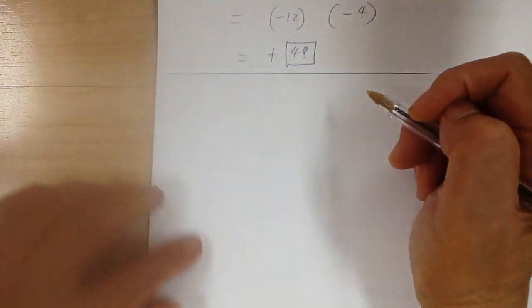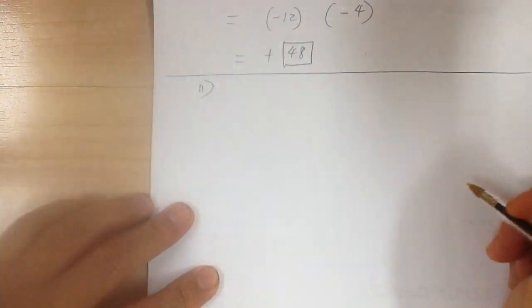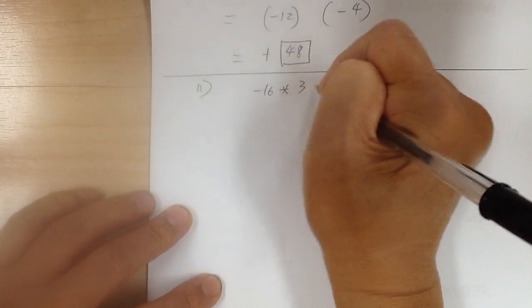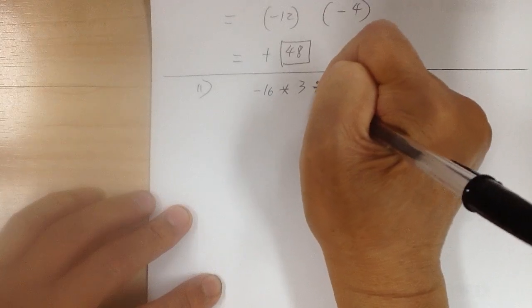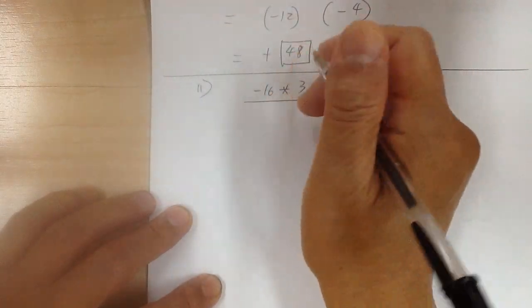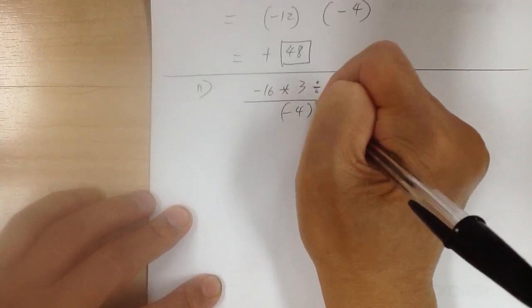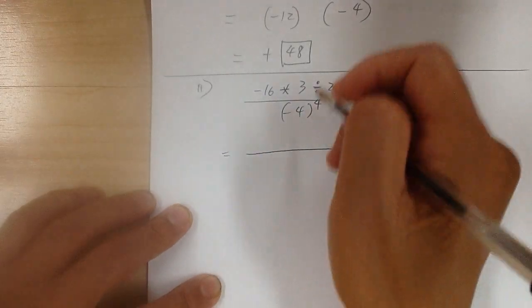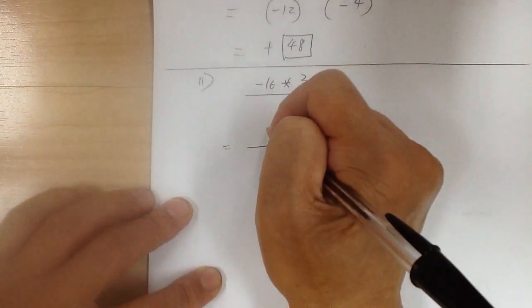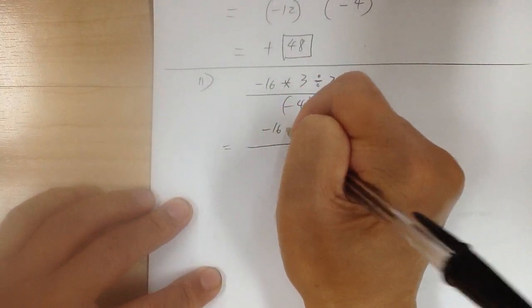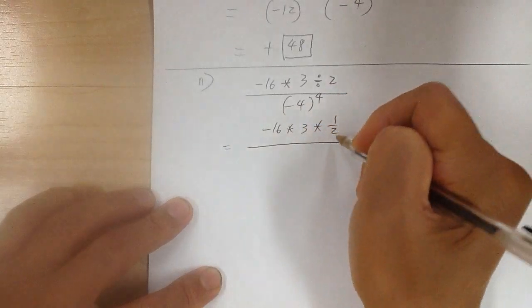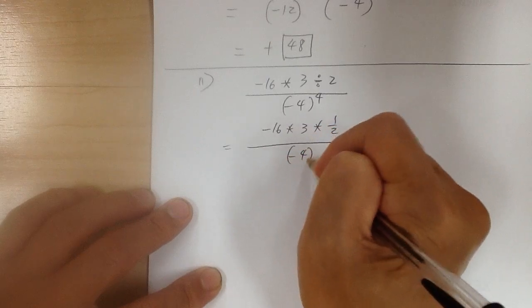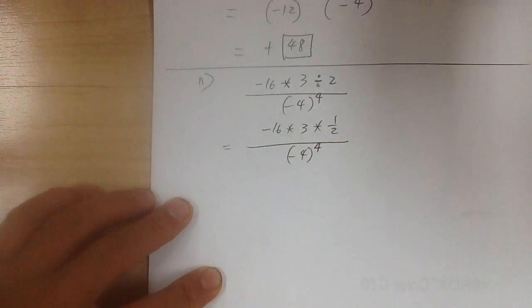Let's go to the next one. Number 11: you have negative 16 times 3, divided by 2, over negative 2 to the 4th. There's a division here, so first I'm going to change that into multiplication. I get negative 16 times 3 times 1 over 2, and on the bottom I get negative 2 to the 4th power.